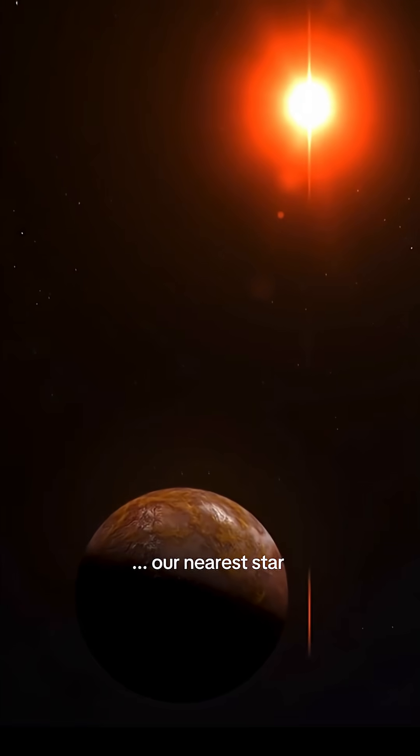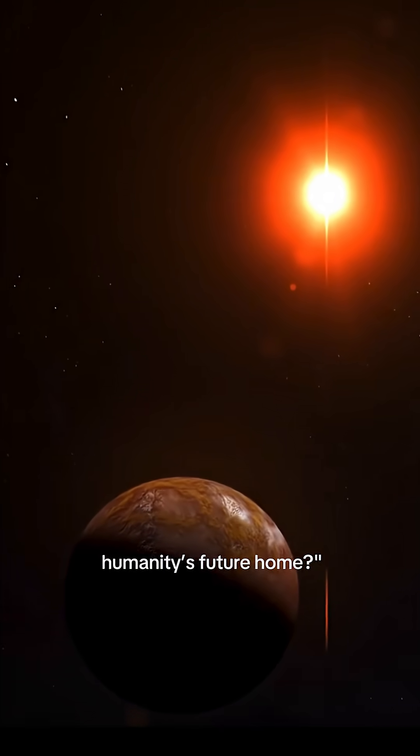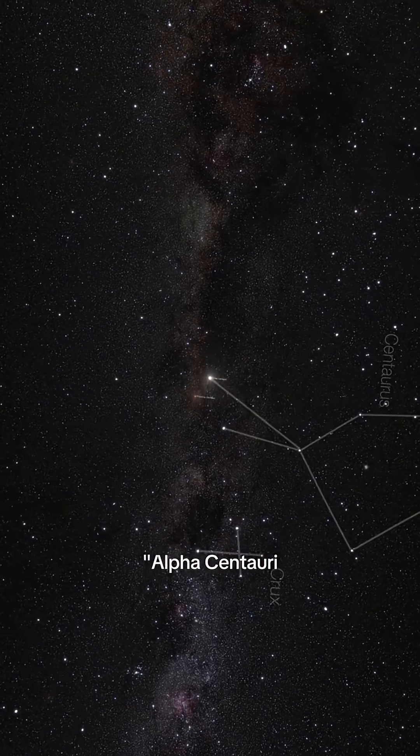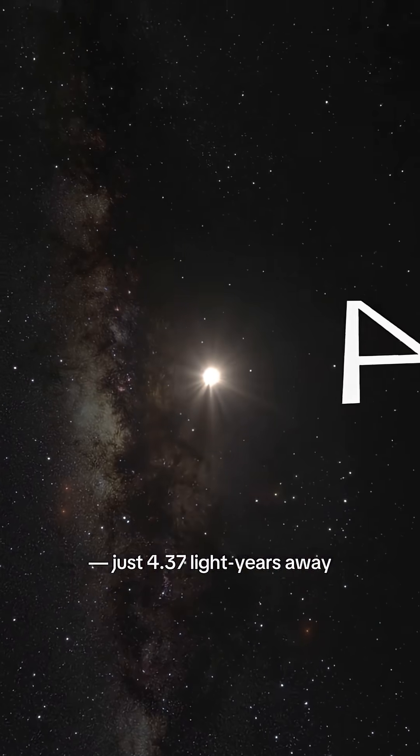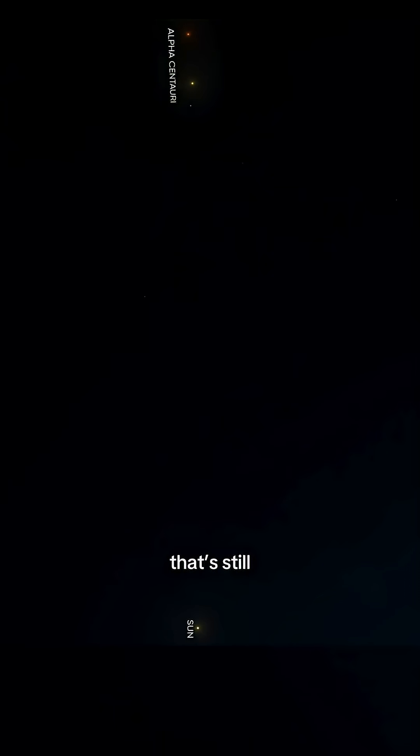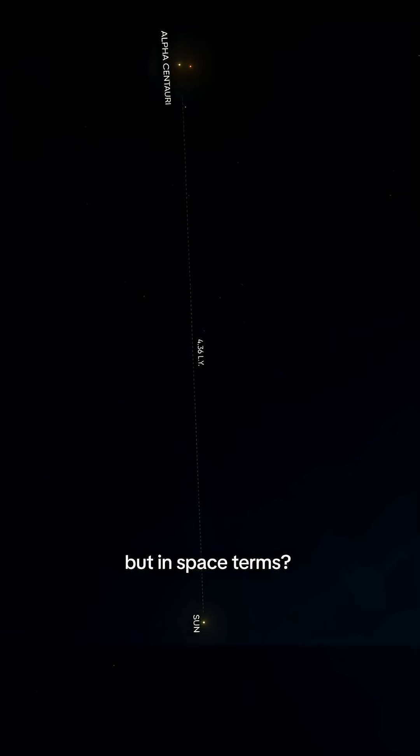What if I told you our nearest star neighbor might just be humanity's future home? Alpha Centauri is the closest star system to Earth, just 4.37 light years away. Okay, that's still 41 trillion kilometers, but in space terms, that's right next door.